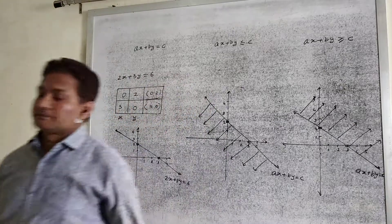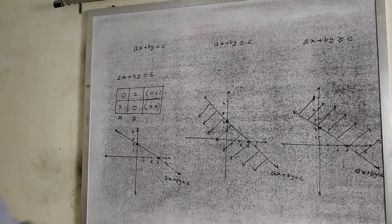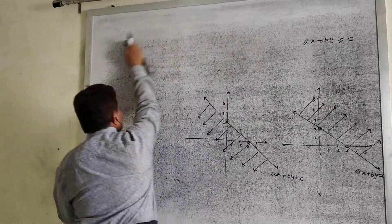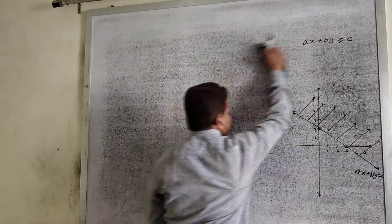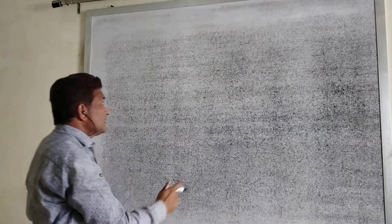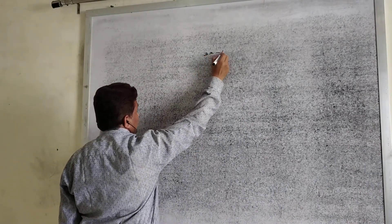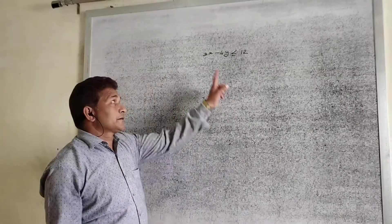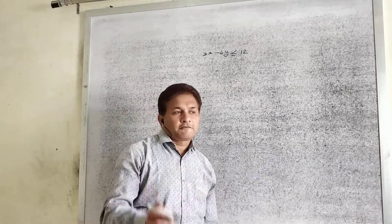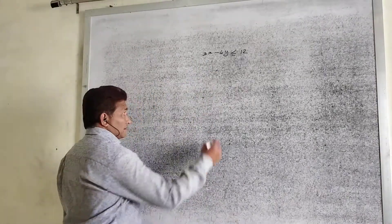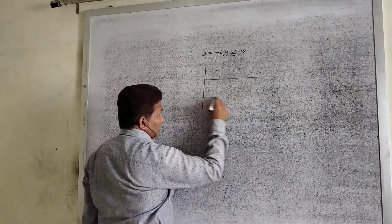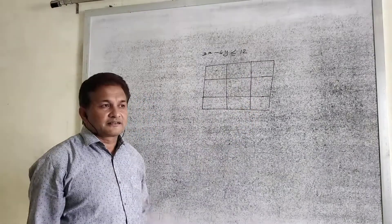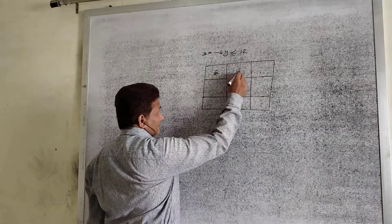We take another example, this time with a minus sign. Suppose the linear equation is 3x minus 4y less than or equal to 4. We are taking minus here because we previously learned the plus case. For this linear equation, draw the line first by finding two points. This is the basic method to find two points on the line, which is taught in the 10th standard.